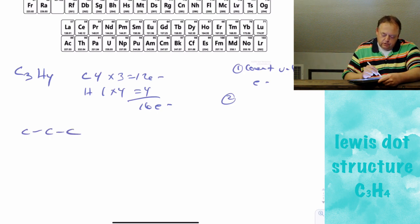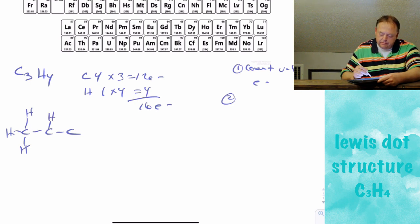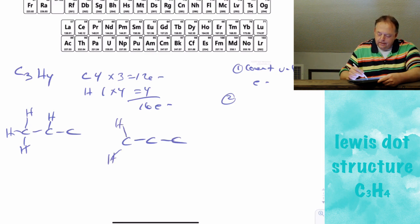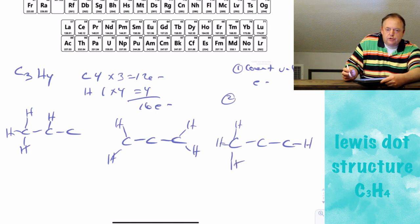We attach the 4 hydrogens — that's one option. Another possibility: 3 carbons in a chain with 2 hydrogens on each end carbon.